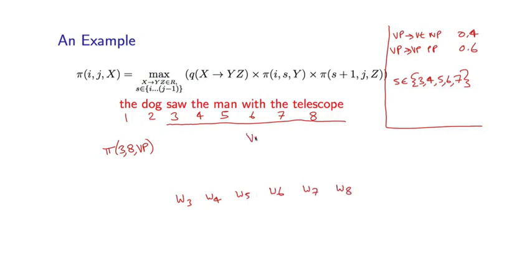If I think of any VP spanning these words, then I have to make some choice of rule. For example, it might be VP prepositional phrase. And I have to make some choice of split point. So let's take S equals 5, for example. What does the split point mean? That means that I'm considering the case where the VP spans words 3 through 5, and the prepositional phrase spans words 6 through 8.